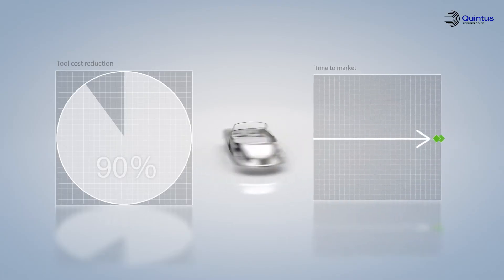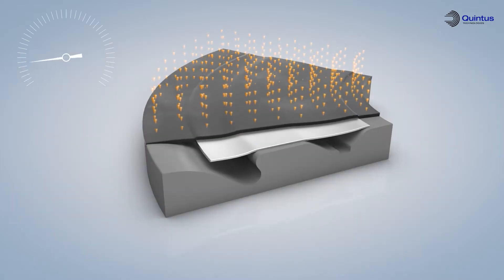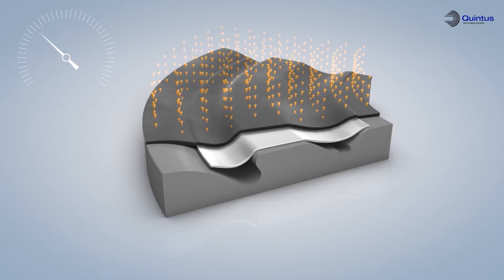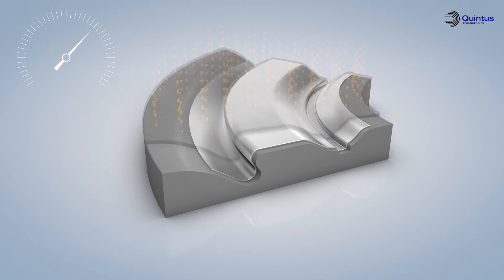Time to market for new model development may be reduced dramatically, and late model design changes can be accommodated at a minimum of cost. The Quintus process uses a flexible rubber diaphragm to form the sheet metal blank towards a single rigid tool half backed up by an extremely high hydraulic oil pressure.